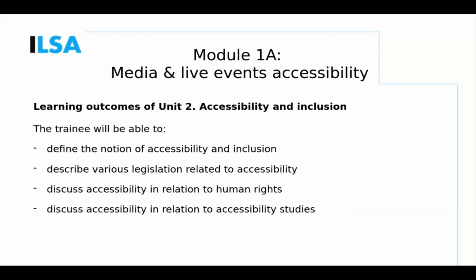The third and fourth outcomes of Unit 2 are related: students should be able to discuss accessibility in relation to both human rights and accessibility studies. For example, they should be able to describe the shifts in approaches to accessibility that have occurred over time, and they should know the various stances on the position of accessibility studies — for example, in relation to audiovisual translation or to media accessibility.